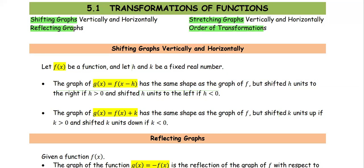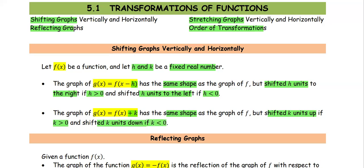Starting with shifting graphs vertically and horizontally: let f(x) be a function and let h and k be fixed real numbers. The graph of g(x) = f(x − h) has the same shape as the graph of f, but shifted h units to the right if h is positive, and shifted h units to the left if h is negative. The graph of g(x) = f(x) + k has the same shape as the graph of f, but shifted k units up if k is positive and shifted k units down if k is negative.